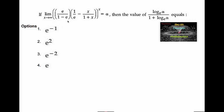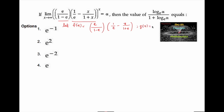Given limit x tends to infinity of e upon (1 minus e) into (1 upon e minus x upon 1 plus x), whole to the power x, is equal to alpha. We need to find log alpha upon (1 plus log alpha). As x tends to infinity, f of x gives 1 and g of x gives infinity, so this is in the form of 1 to the power infinity, which is an indeterminate form.